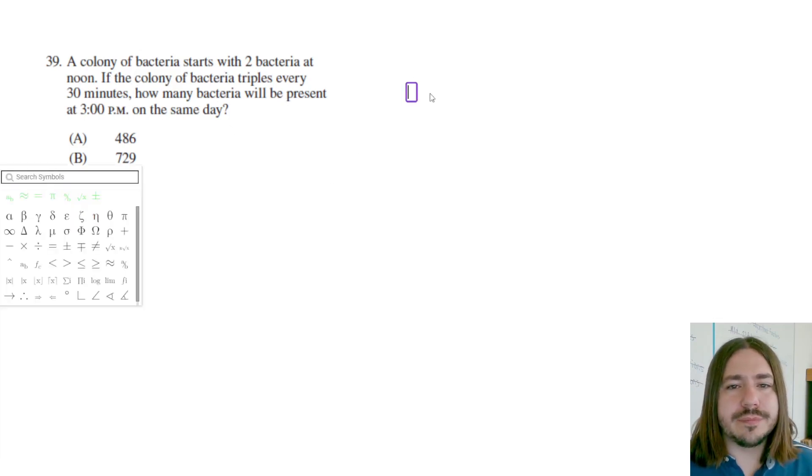So you really could use an exponential equation to model this. We say y equals, start with two. The general form of an exponential equation is going to look like this, where a is your initial amount and b is your multiplier. So you could write one that says, okay, we start with two. We're going to triple every 30 minutes.